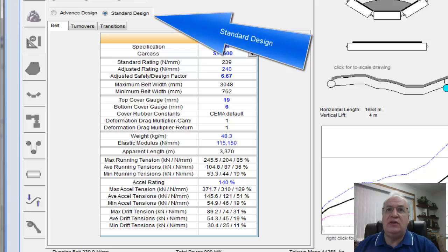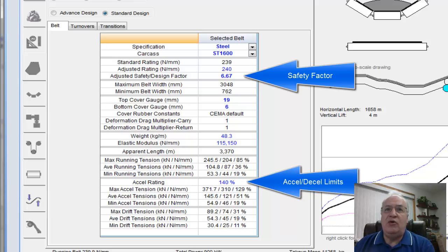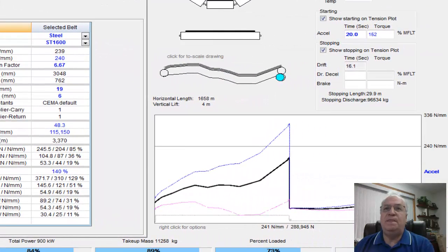But first we'll review the standard design, which is the traditional design where you see a belt rating, a safety factor for that belt, and a percentage of where we limit the acceleration and deceleration forces during starting and stopping.